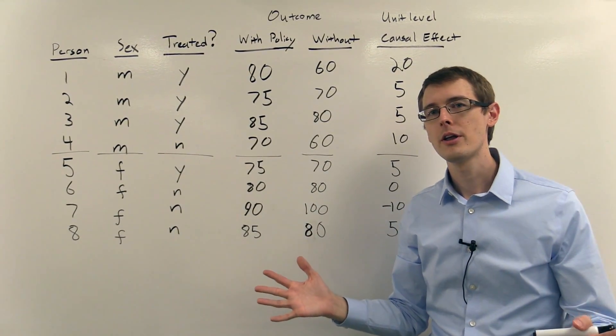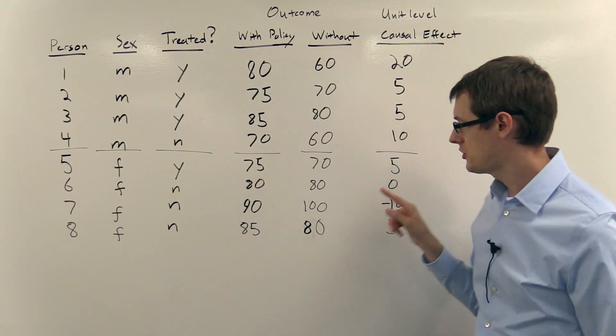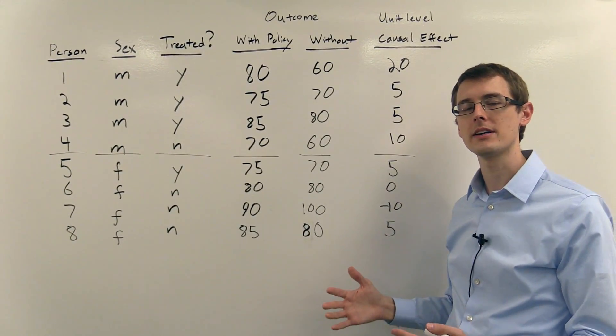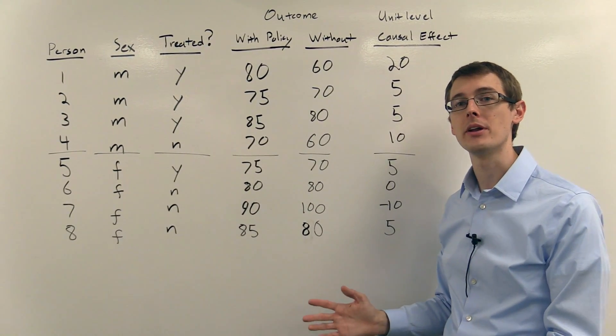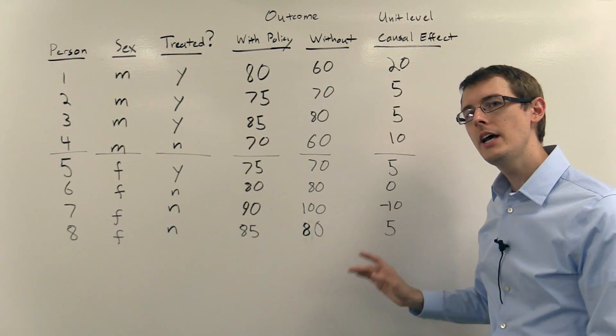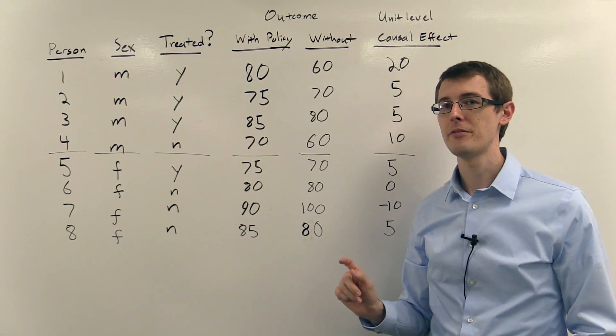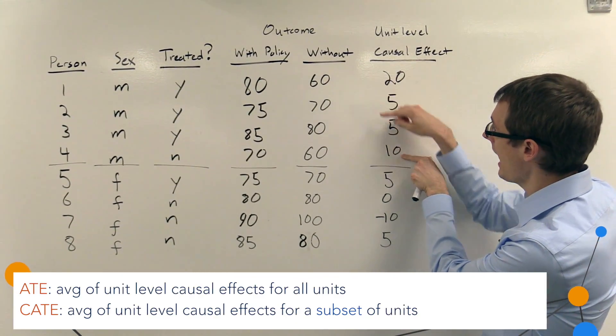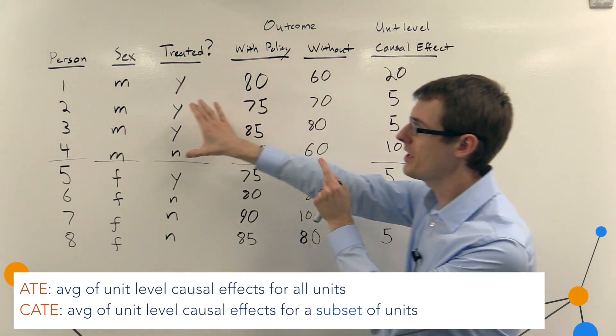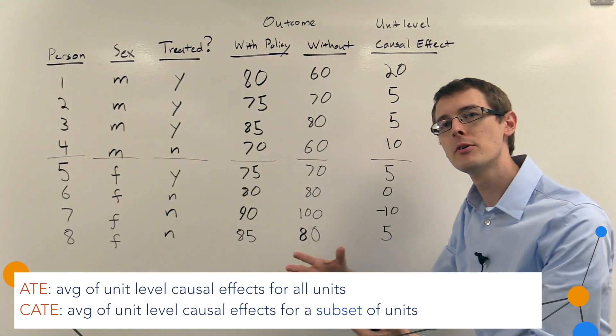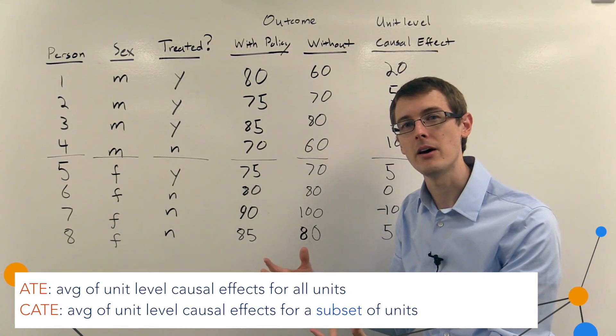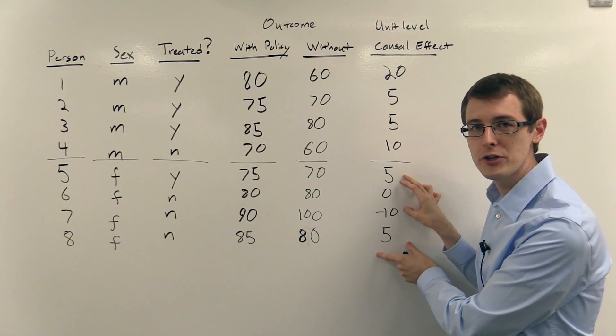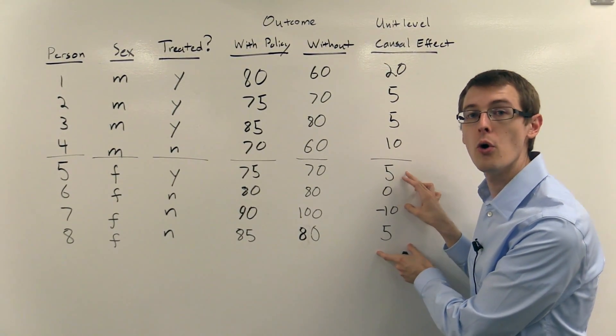So remember back from earlier, the average treatment effect is just the average of these eight numbers - the average unit causal effect for everybody in the population. The conditional average treatment effect for men is just the average of these four numbers, the average unit level causal effects only for the men. And similarly, the conditional average treatment effect for females is just the average of these four numbers.